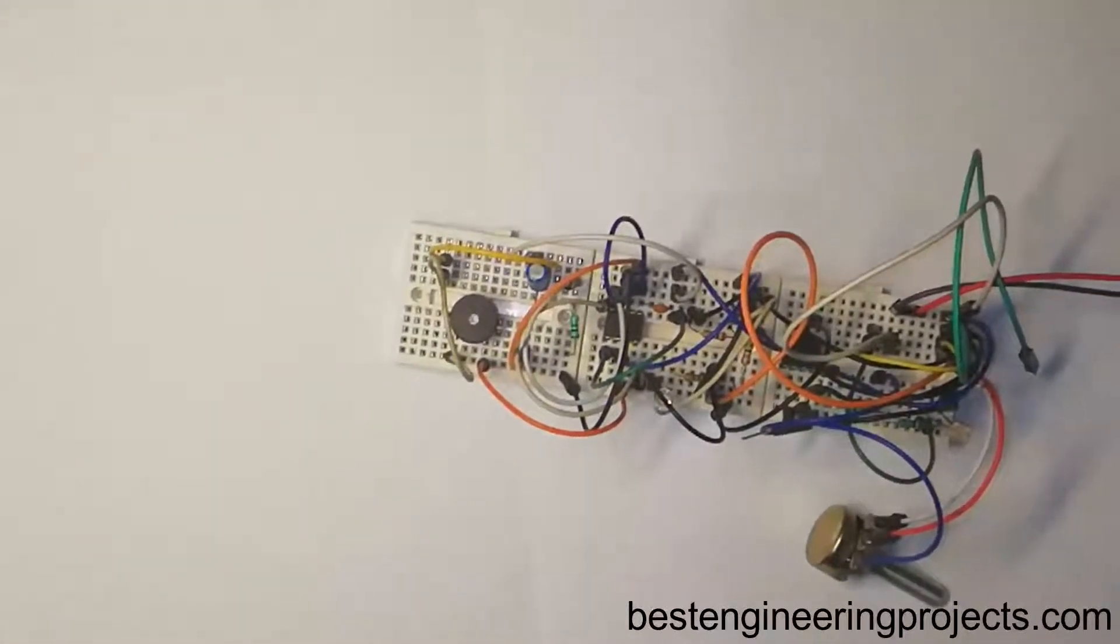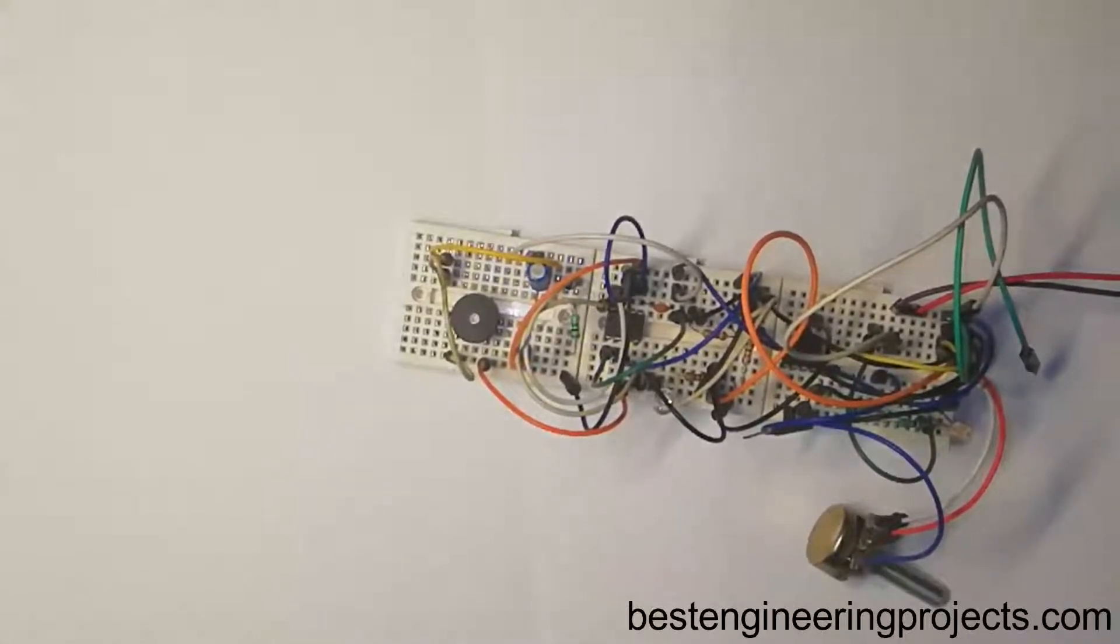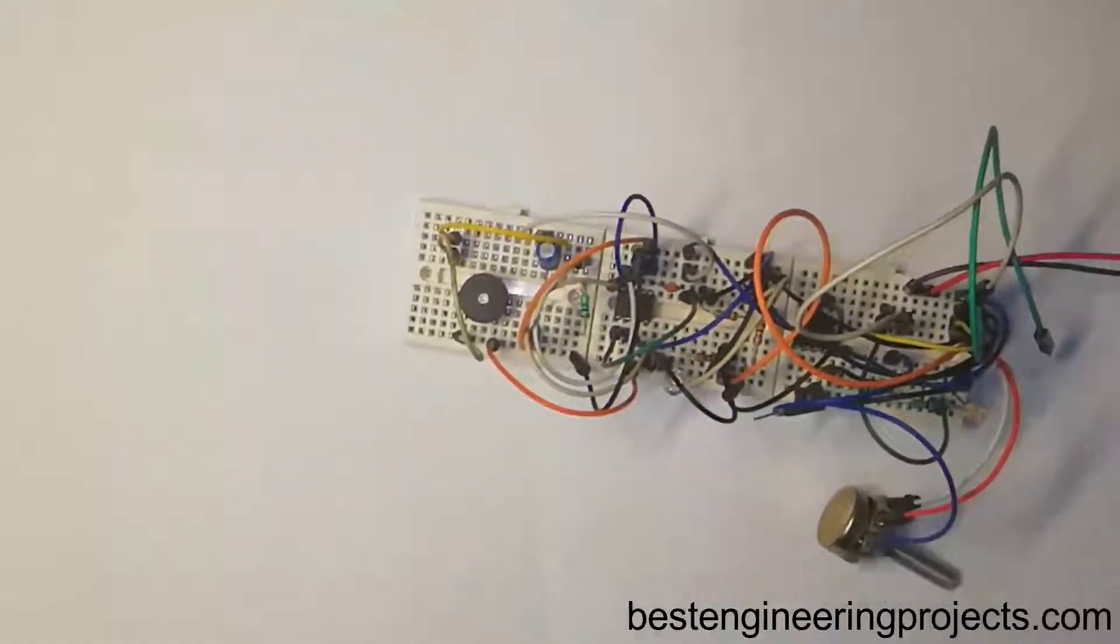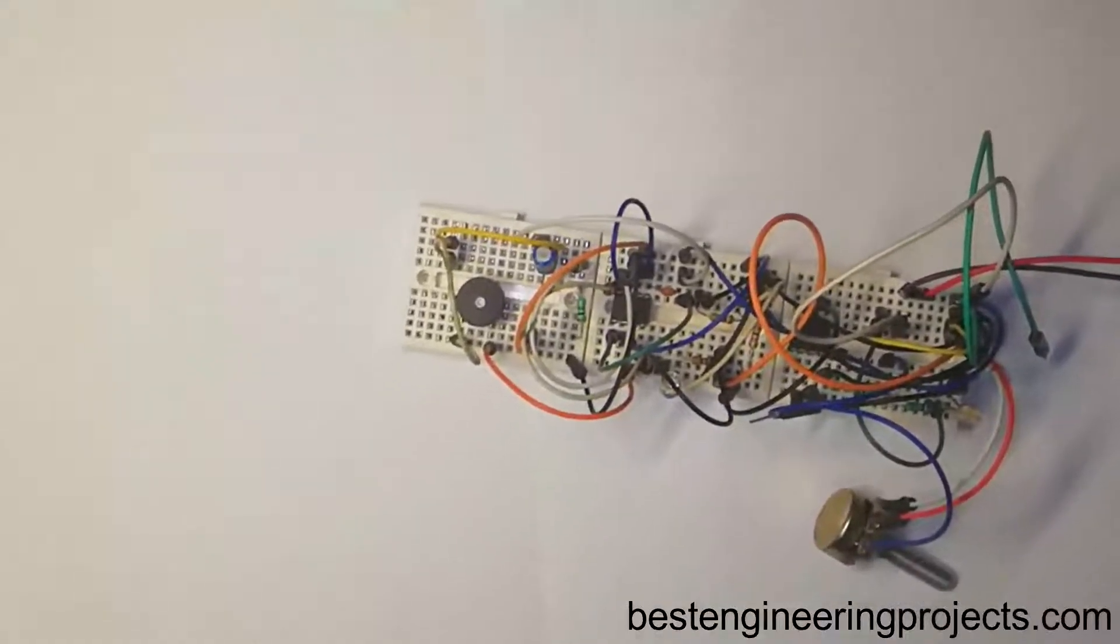Basically a fence lighting circuit is used for security purposes and can be used at various places like your home pathway or alarm, where monitoring is required. Various types of fence lighting circuits are already available over the internet.